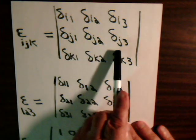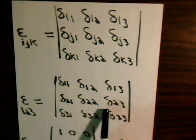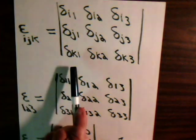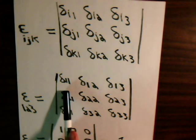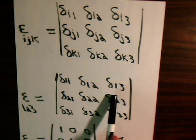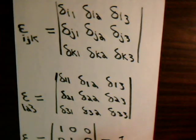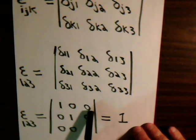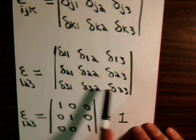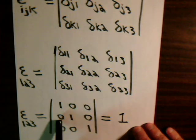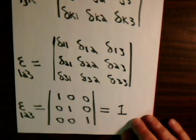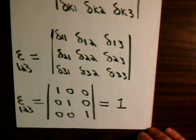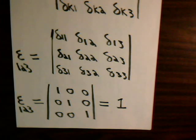j is two, giving us this rule. k is three, generating this rule. We see this entry is one because the indexes match; mismatched indexes give zero. So we have one, zero, zero in the first row; zero, one, zero in the second row; and zero, zero, one in the third row. And indeed, that determinant has a value of one.